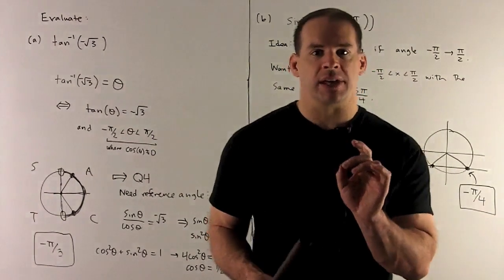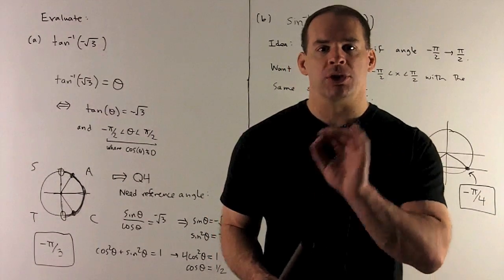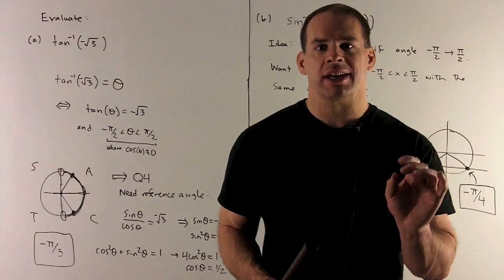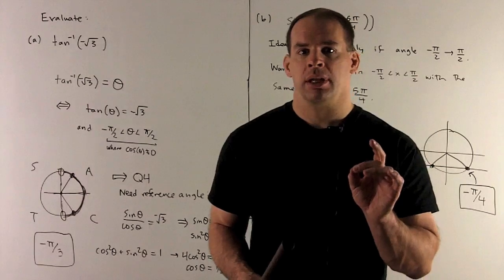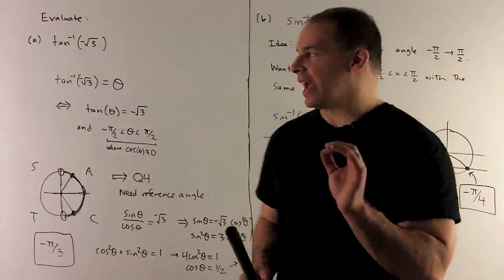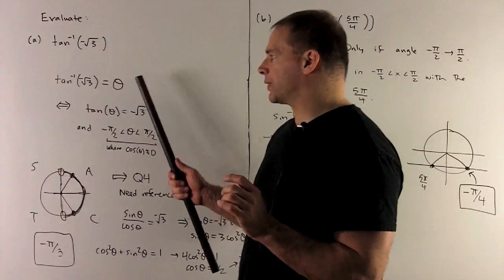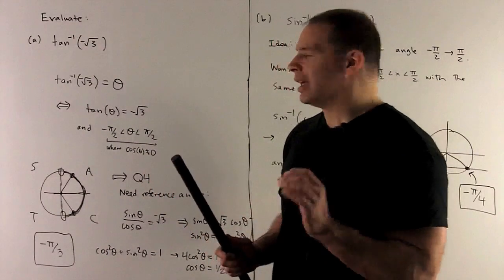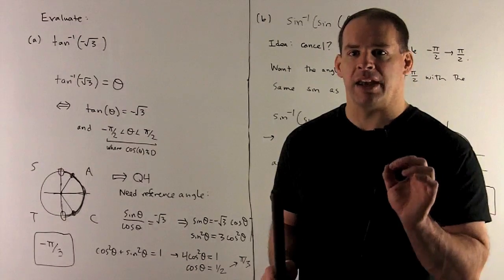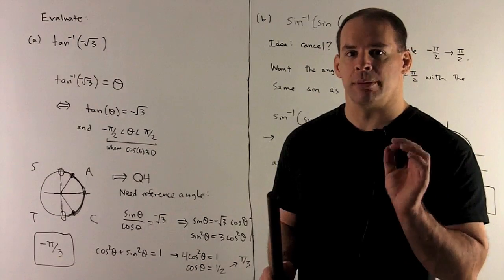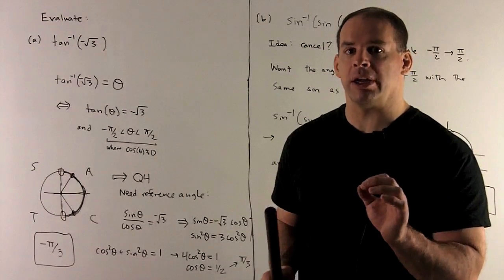Once we have this, we're able to use a language trick to get to our answer. If we have tan inverse of minus square root of 3 equals theta, I can rewrite that as tan theta equals minus square root of 3.